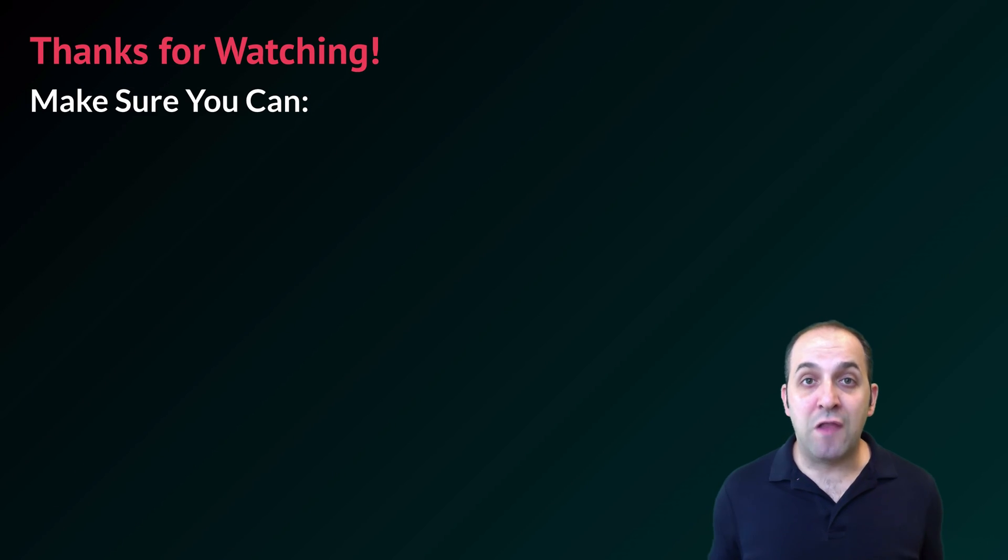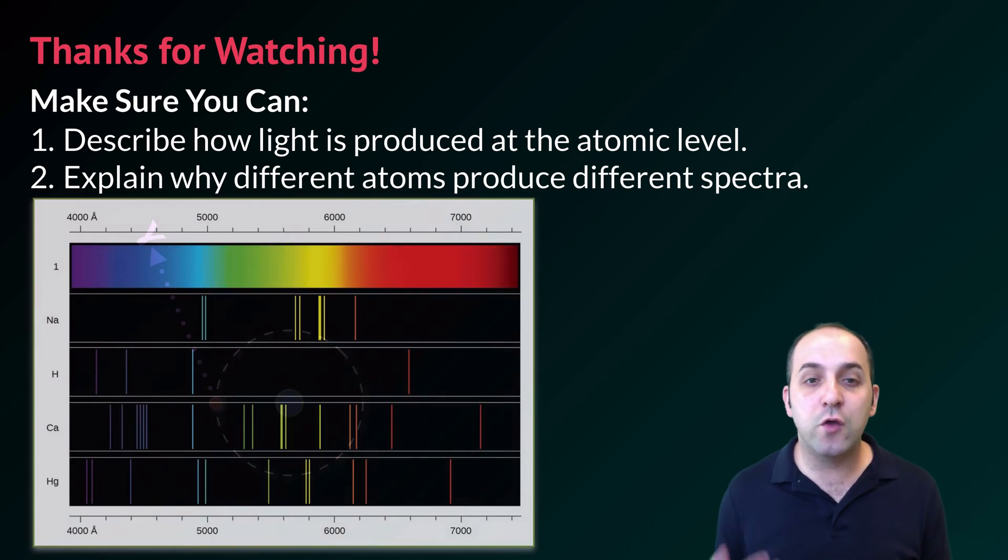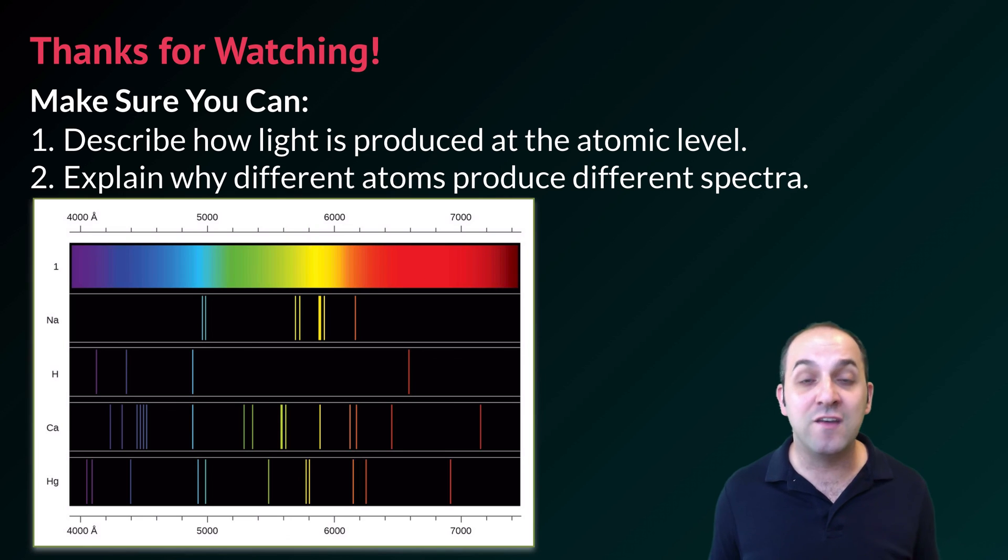Thanks for watching our discussion of light and electromagnetic radiation and how it's produced. Make sure that you can do the following things here at the end. Make sure that you can describe how light is produced at the atomic level, the transition of electrons from the ground state to the excited state after absorbing quantized amounts of energy, and then the release of specific wavelengths of electromagnetic radiation as they transition back to the ground state is a really important model for you to have a handle on for your chemistry education and just more generally for your scientific life. Also make sure that you can explain why different atoms produce different spectra.